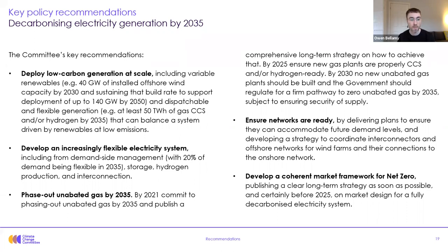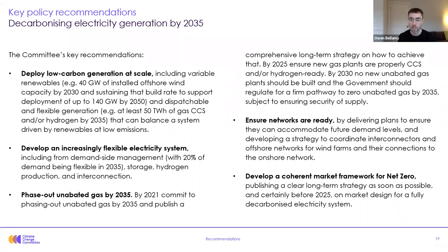We need to develop the markets for dispatchable low carbon generation — gas CCS and hydrogen — in order to phase out unabated gas by 2035. The government should commit to phasing out unabated gas for power generation by 2035 and publish a comprehensive strategy next year for achieving that, demonstrating how markets for variable renewables and dispatchable low carbon generation can be developed. By 2030 they should be in a position to regulate for no new build of unabated gas plant and a firm pathway to zero unabated gas by 2035, subject to ensuring security of supply.